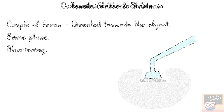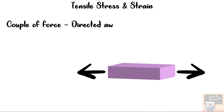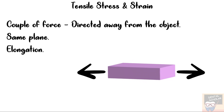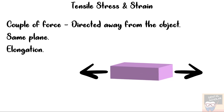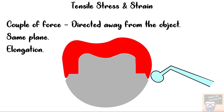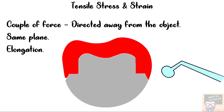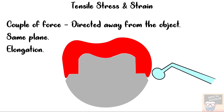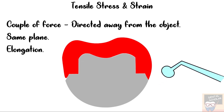Next, let's go to tensile stress and strain. Here the couple of forces is directed away from the object, acting in the same plane, resulting in elongation of the object. An example of tensile stress in dentistry is the adaptation of the margin of a metal crown, inlay, or onlay — when the margin is adapted, it gets elongated.